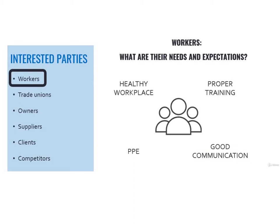And, in turn, workers are very exposed to every choice the company may take regarding OHS. What are their needs and expectations? We could think together about the most common ones. The first need we can think of is a healthy workplace. Then, of course, having the correct PPE according to OHS requirements, generally being trained adequately before doing any new task, and being able to communicate about injuries, near-misses, and so on.